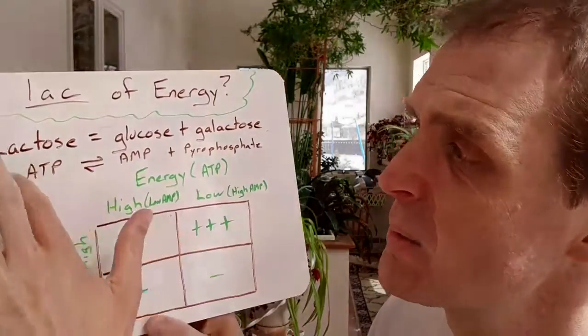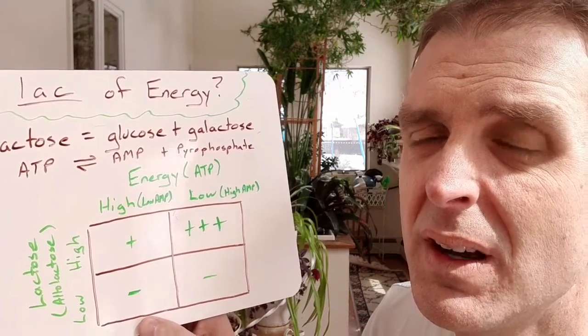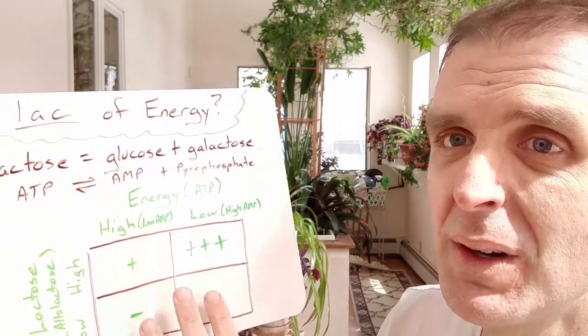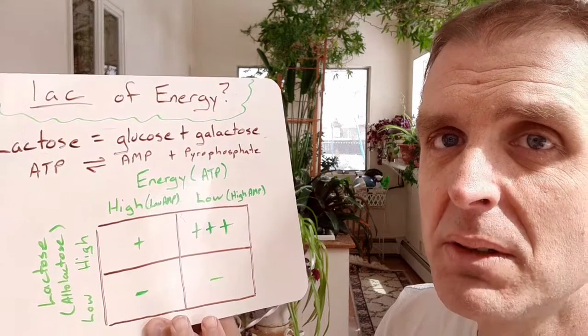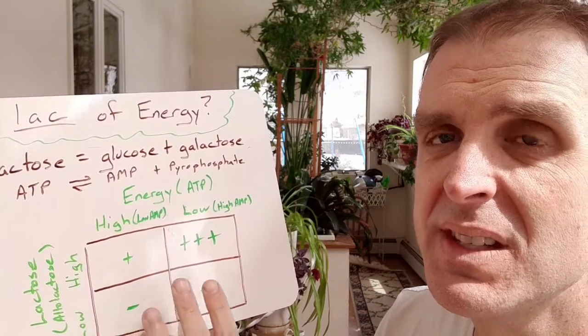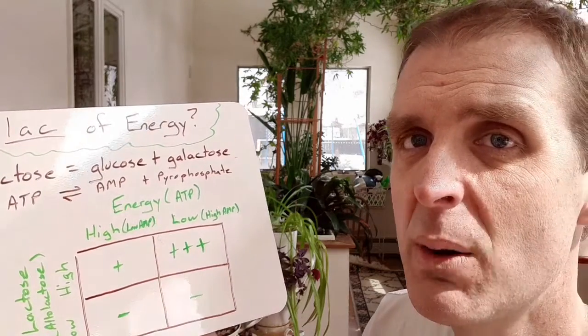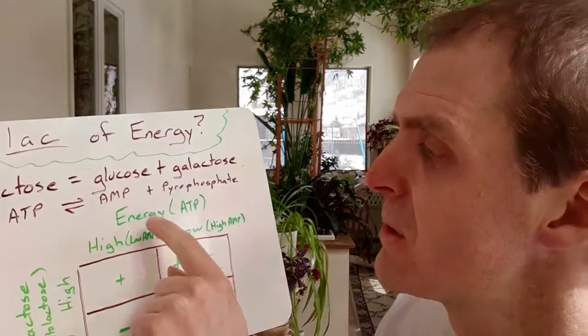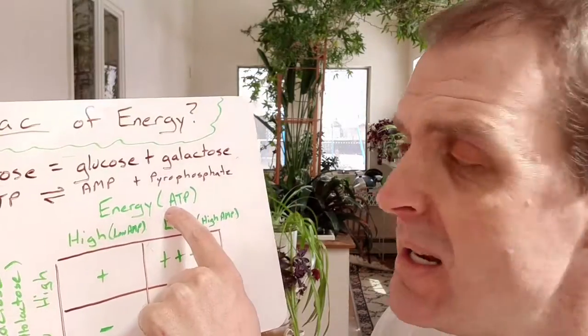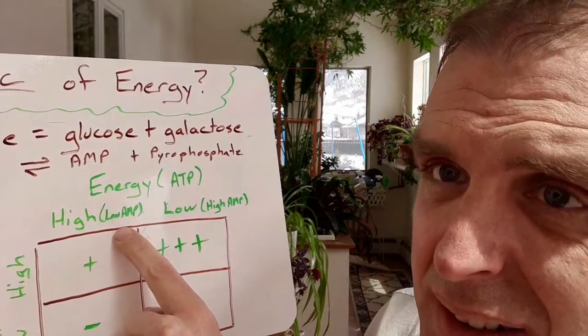Because we're taking into account two different metabolites in our logic for controlling this gene, that means we're going to have four possible scenarios with which the cell will want to take the inputs and come up with one output for what should happen. So the cell wants to take stock of how much energy it has. By energy, I mean ATP. If the energy is high, I have in parentheses there, low AMP.